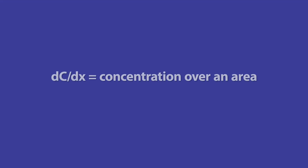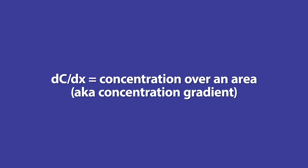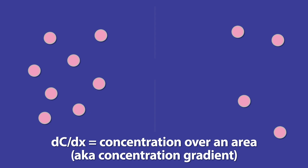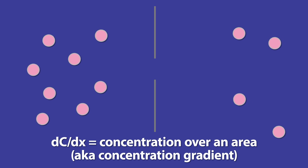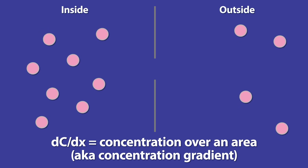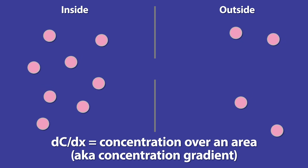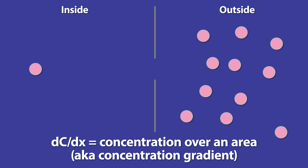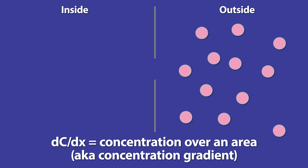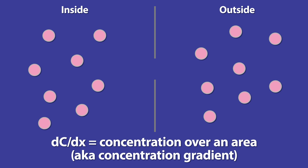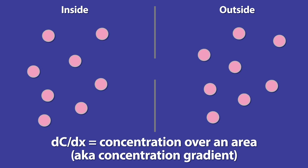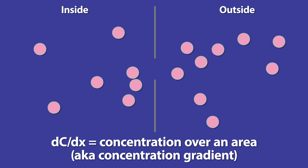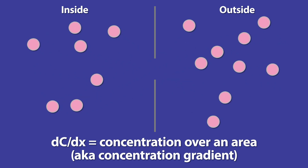And that DC over DX is the concentration gradient. This relates to how many molecules are present on either side of the space. Back to our concert example: if there are a lot of people inside the arena and not so many outside, people can exit relatively quickly without bumping into others. But if the next show has begun and people are trying to enter while others are trying to exit, they'll bump into each other and slow down the movement.